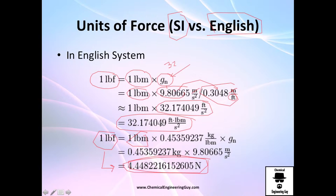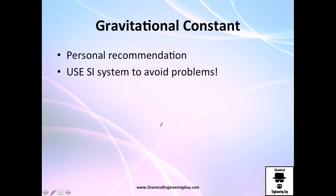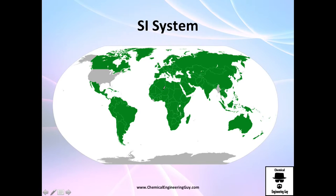This is very important, especially if you are using the English system. Once again, my personal recommendation, whether you are SI user or English user and you have a problem with English units: change everything to international system and forget about the gravitational constant problem because it's equal to 1.